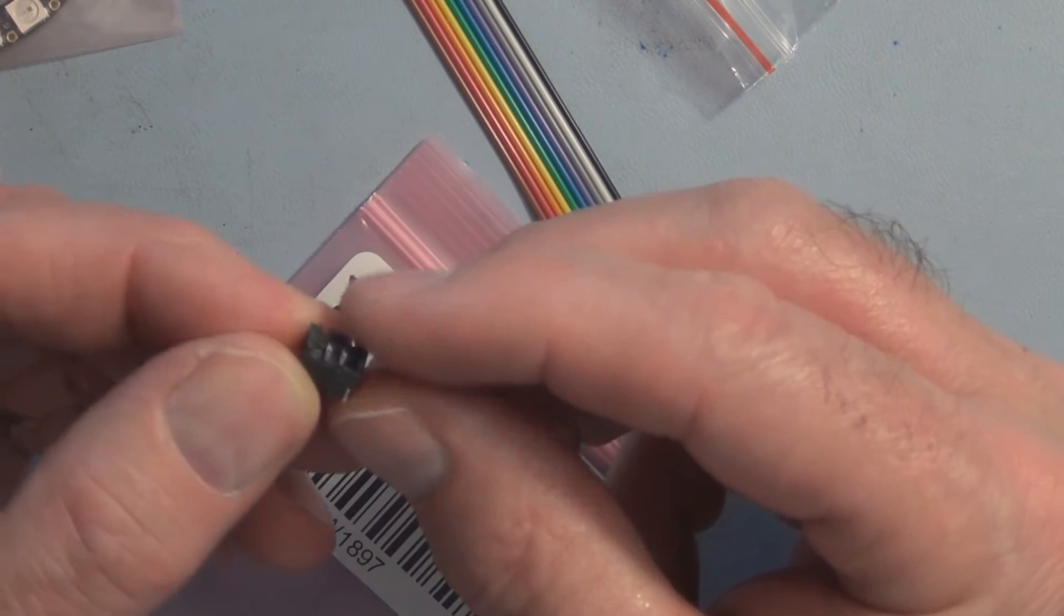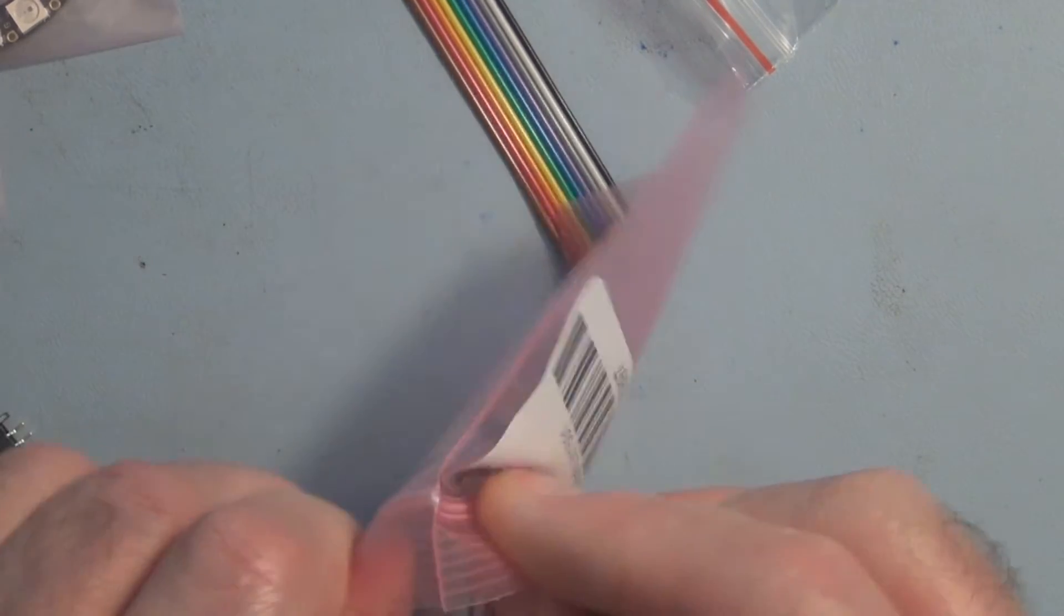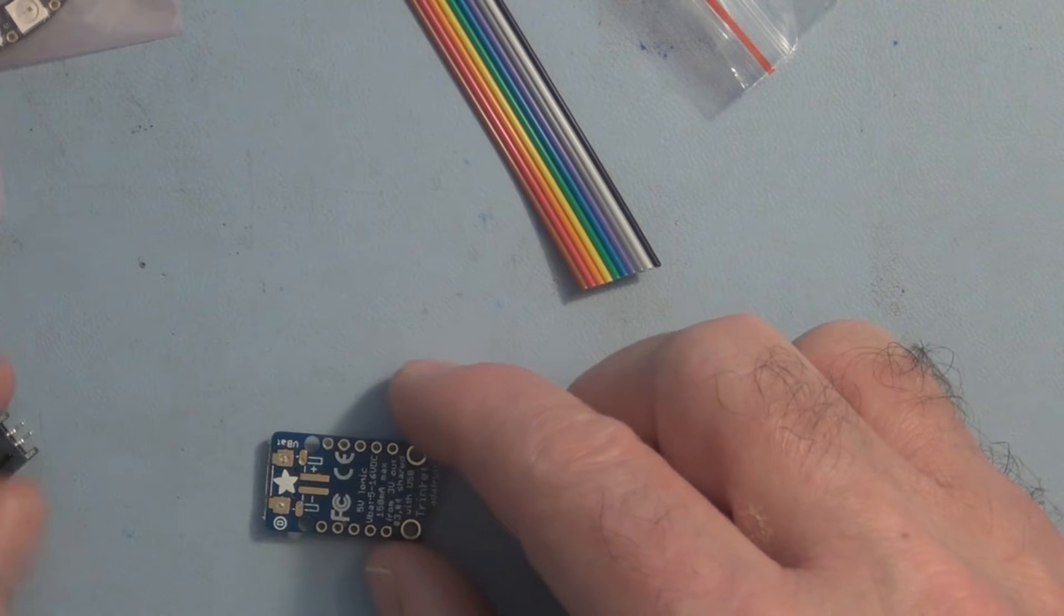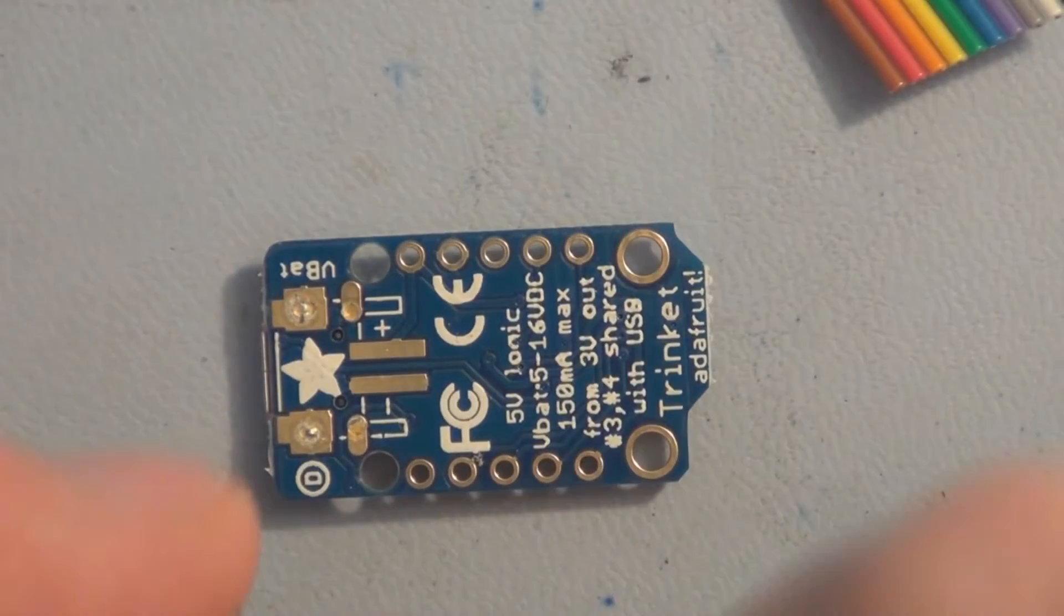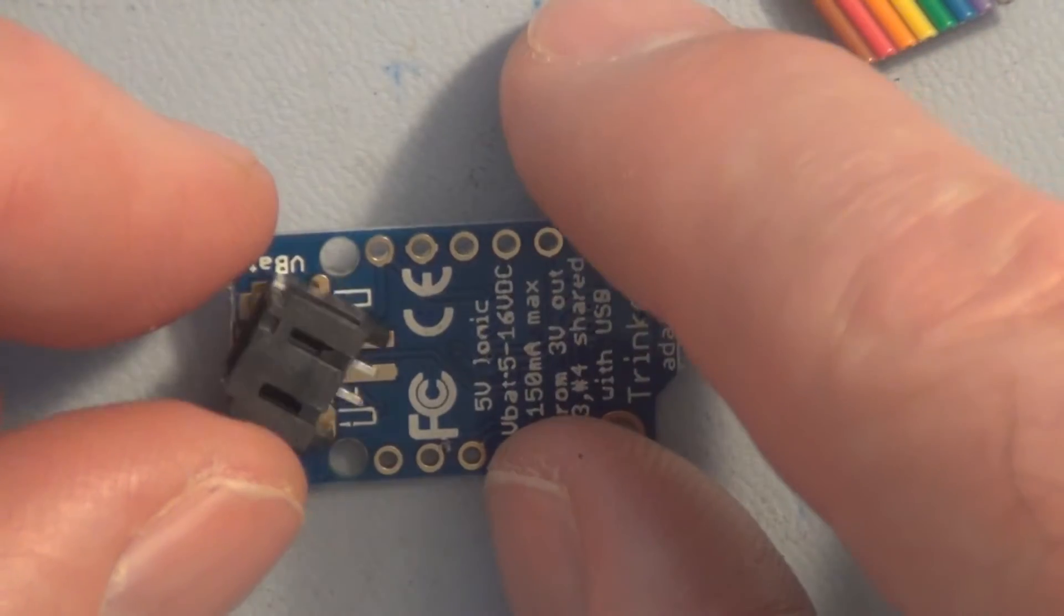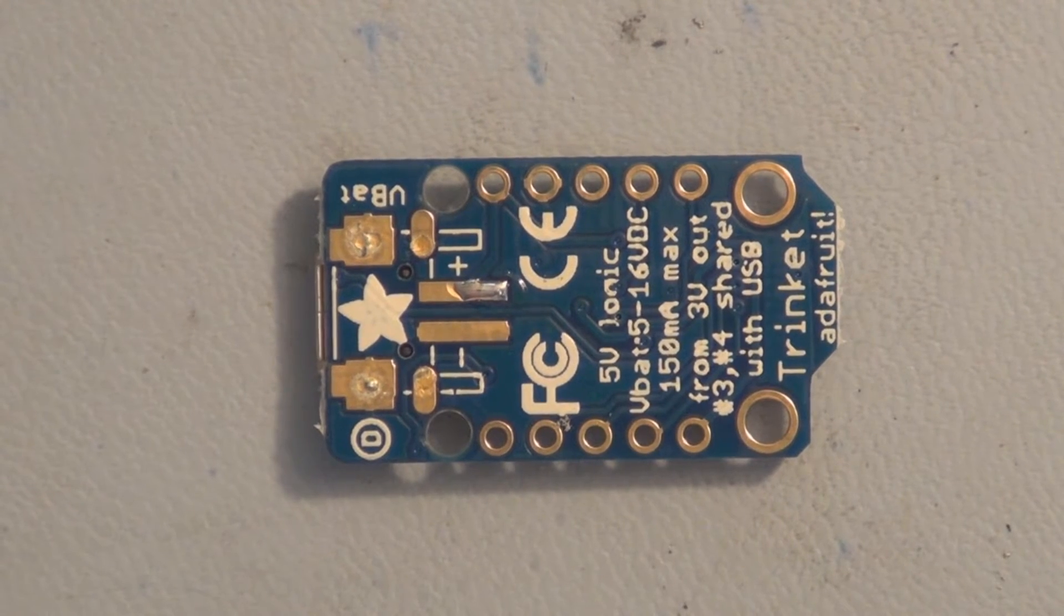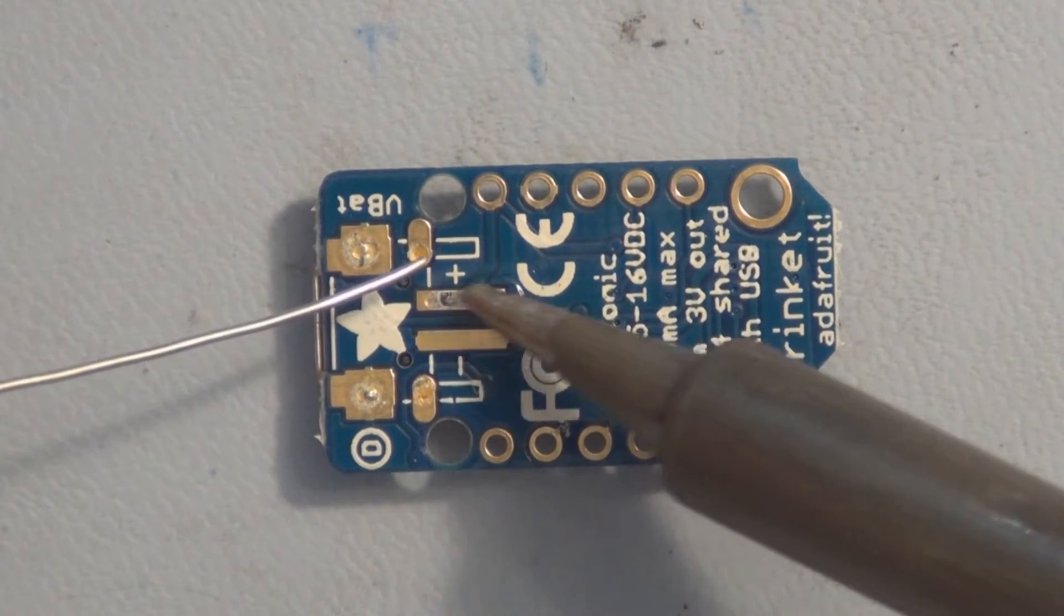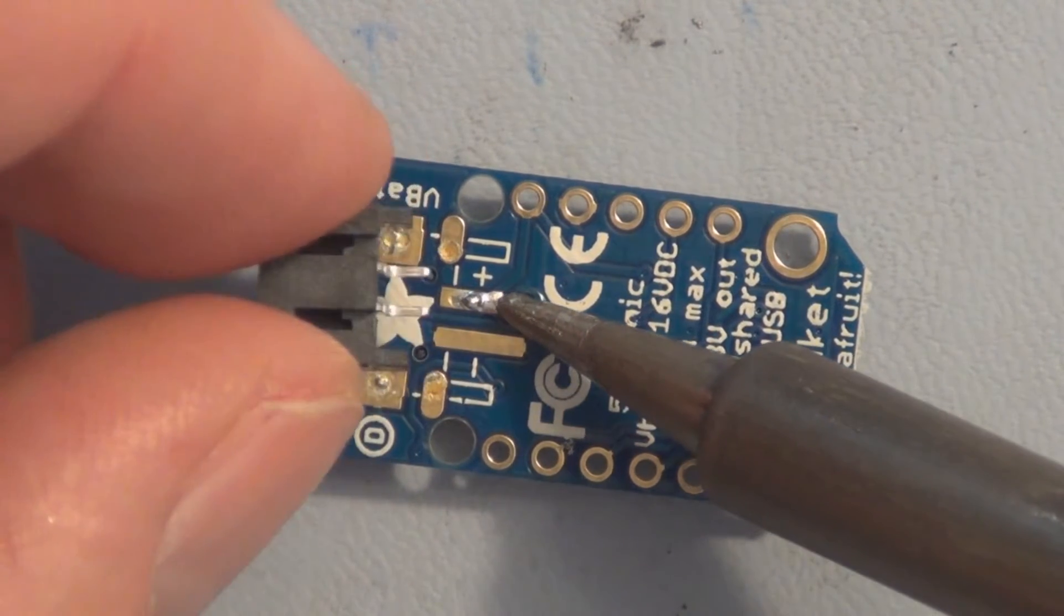The first thing I want to do is put this JST connector on the trinket. I won't be using these header pins because this will be glued into the goggles. A good idea is to just take one of these pads and tin it with a little bit of solder, then reheat it and tack down one of these leads here.